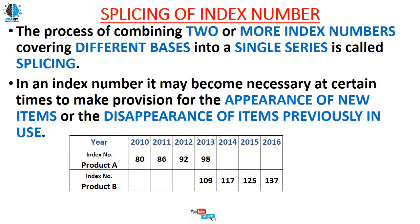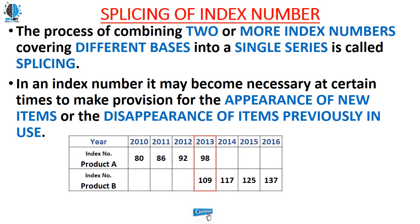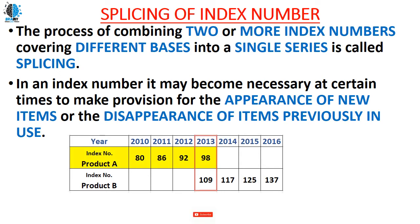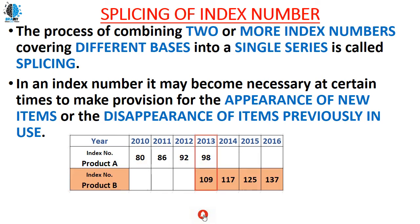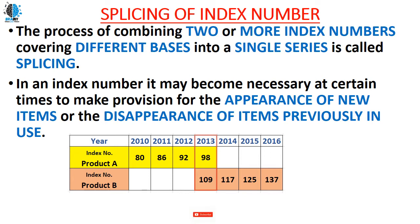Consider this data. Product A starts in the year 2010 and survives in the market till 2013, and a new product came into the market in the same year 2013. So the intersection year is 2013. Product A survives till 2013 and product B starts in 2013 — the moment product B came into the market, product A disappears. So we have the appearance and disappearance of two different products.